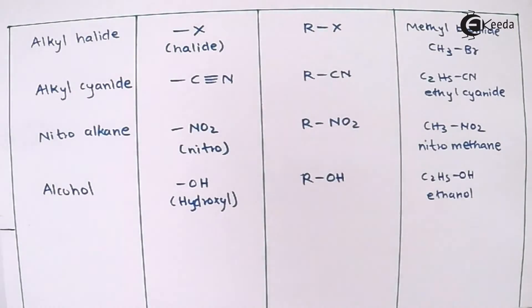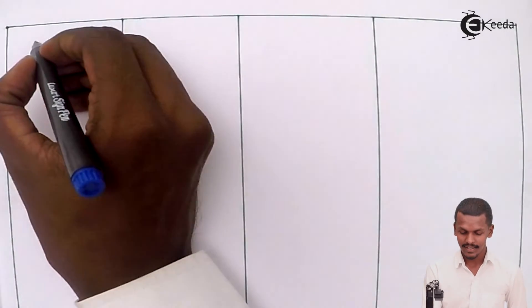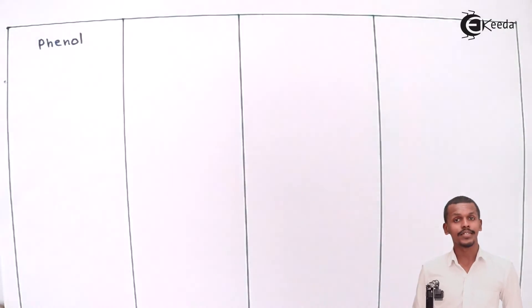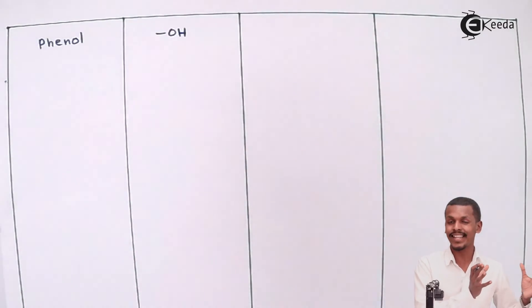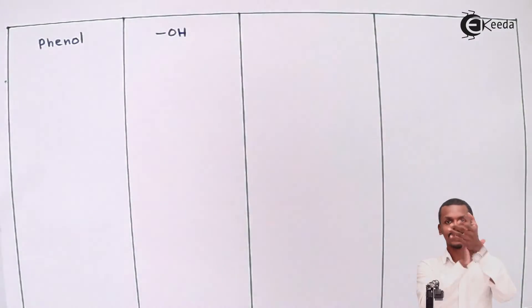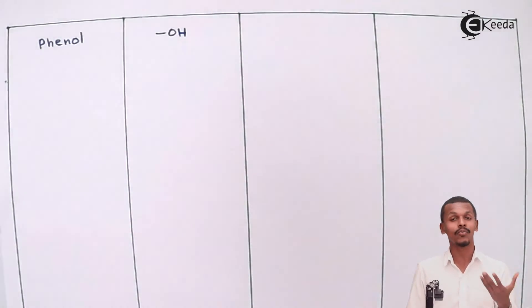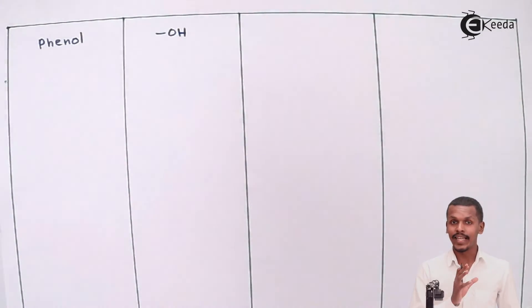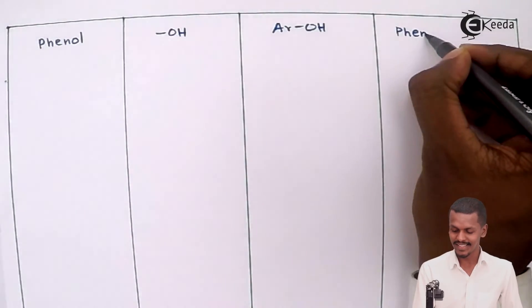The next class is phenols. Phenols also have an OH group, but this OH group is not a hydroxyl group because it is not attached to an alkyl group — it is attached to an aromatic group. This OH is called a phenolic OH. The general formula is ArOH, and the most well-known example is phenol itself.